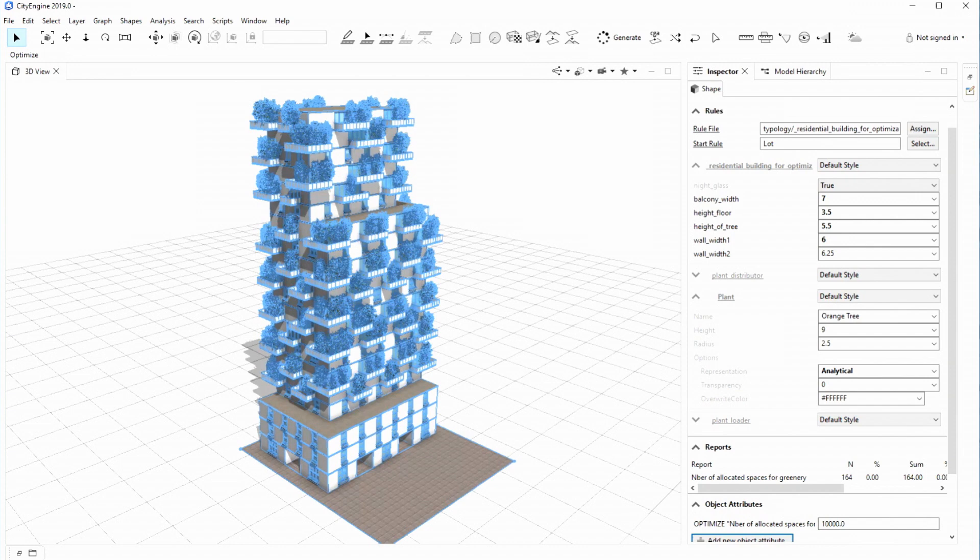So now it's done. As you can see in the report, the maximum number of trees on my building is 164 trees for this set of attributes: balcony width 7 meters, height floor 3.5 meters, etc.